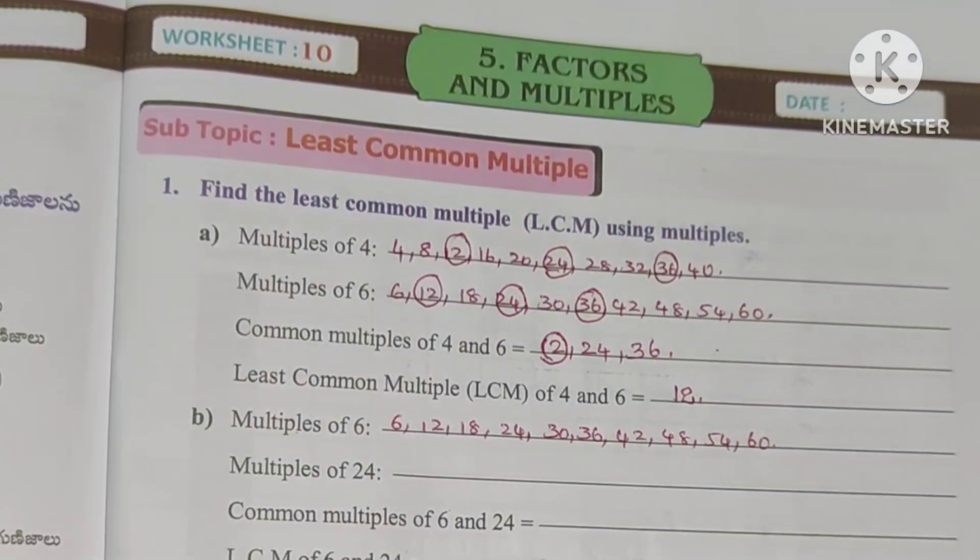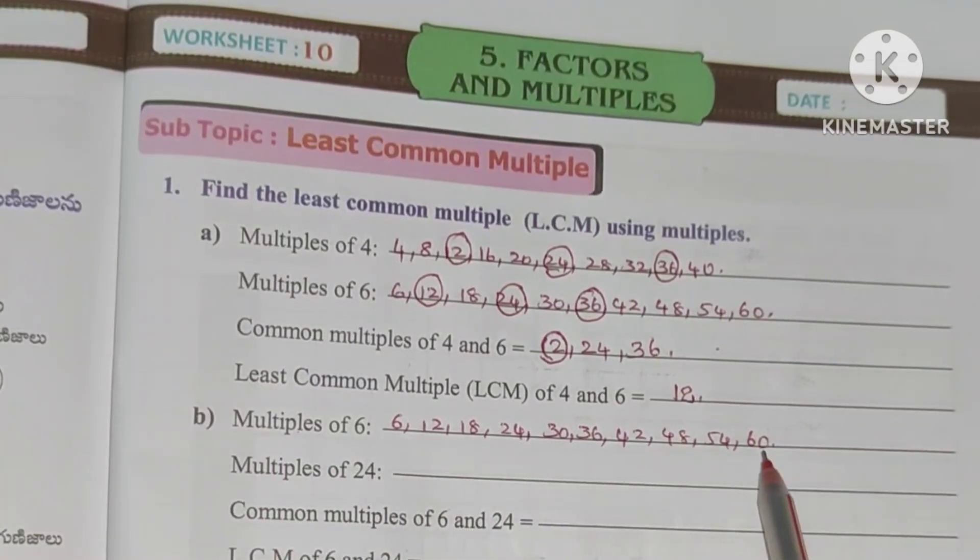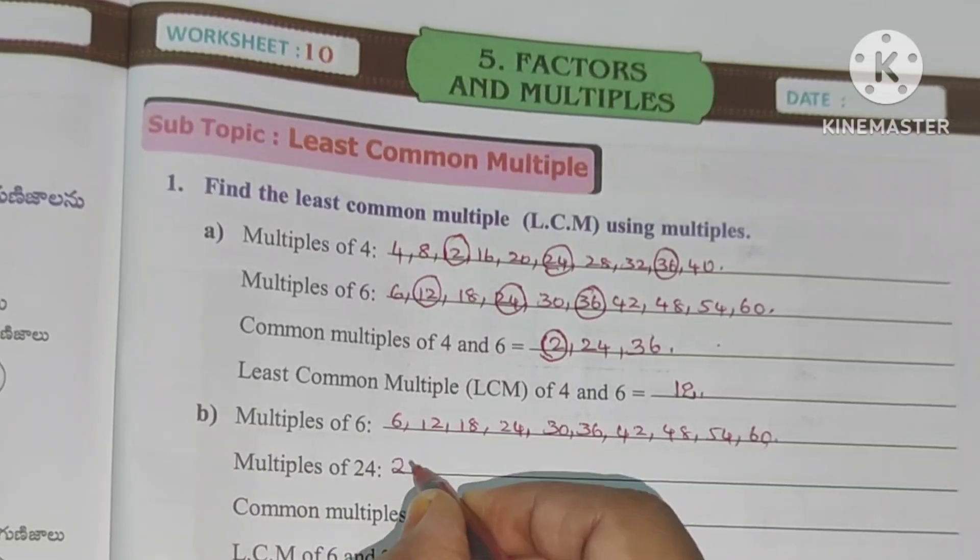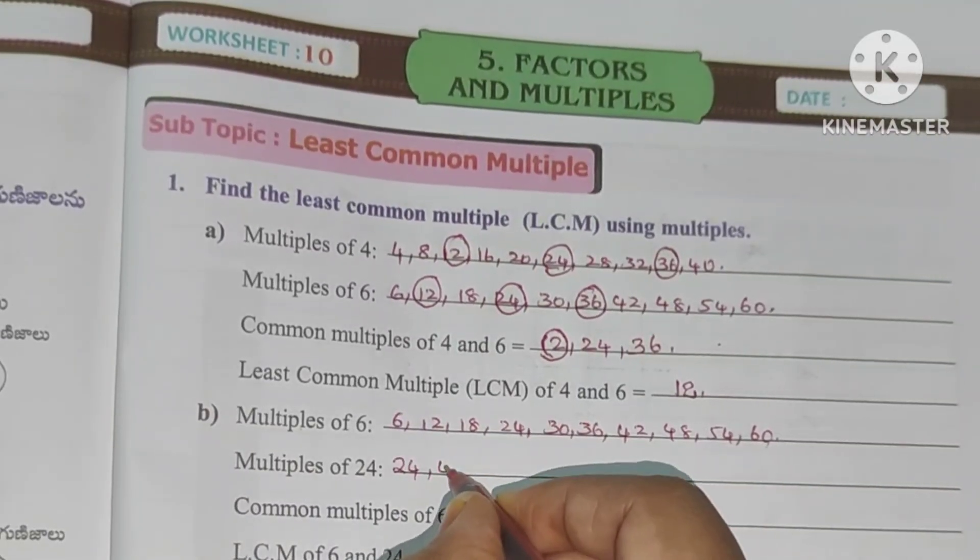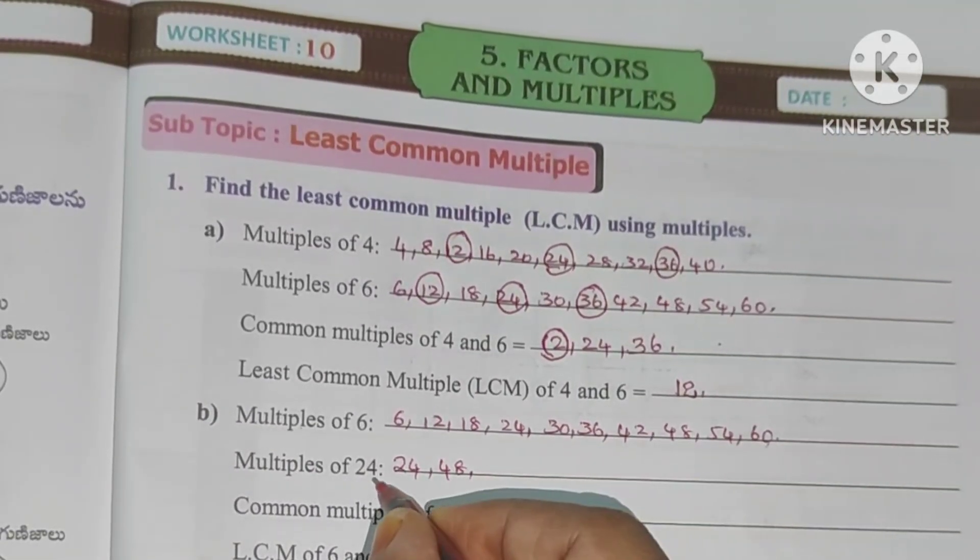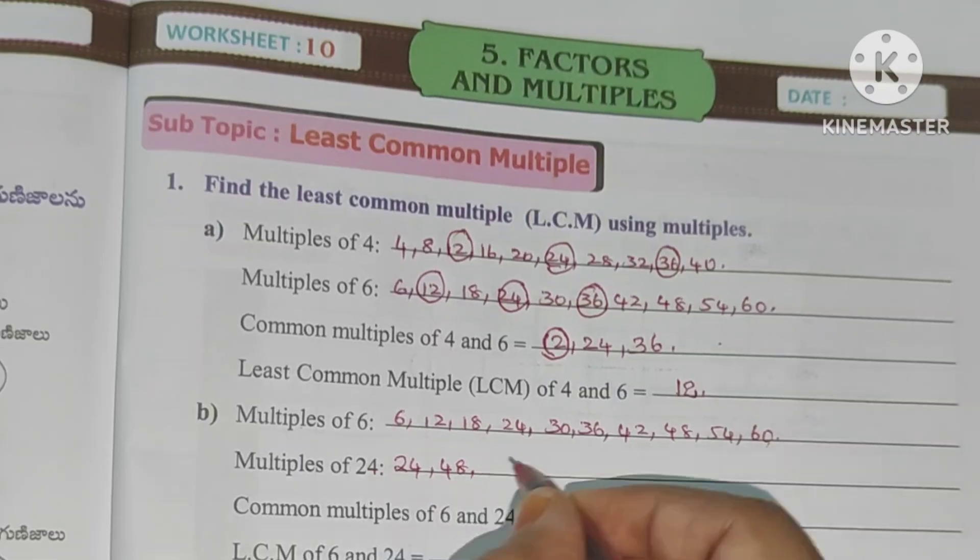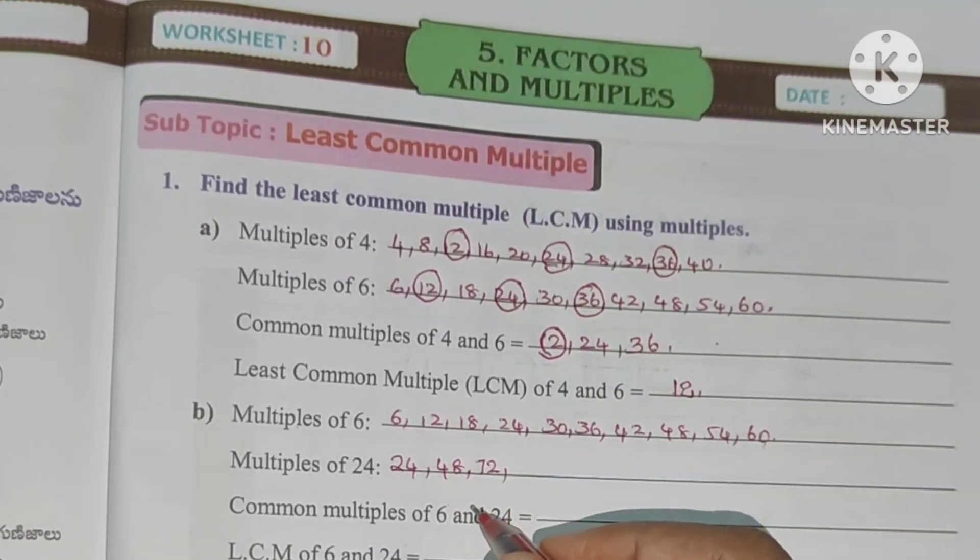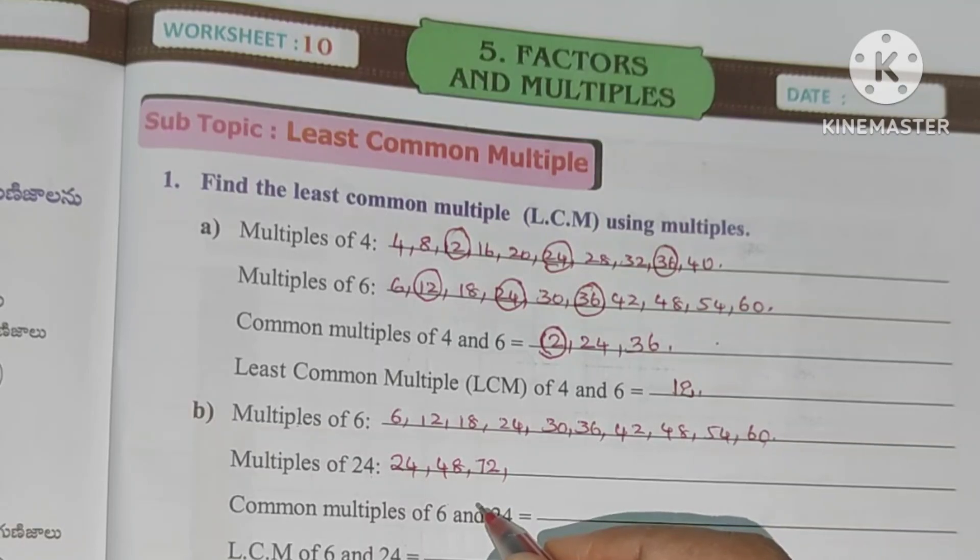So LCM is 12. Here too, multiples of 6 is 6 tables. Now 24 is 24 tables. 24×1 is 24, 2 is 48, 3 is 72. We will write these multiples.